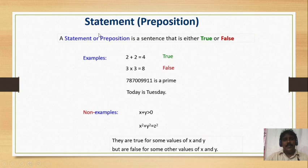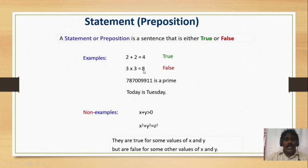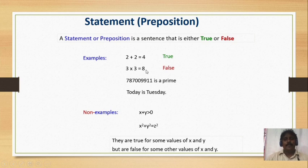Now, the first definition: a statement is also called a proposition. A statement or proposition is a sentence that is either true or false but not both. For example, 2 + 2 = 4 is a true statement. And 3 × 3 = 8 is a false statement — since 3 × 3 is actually 9, not 8. Both are statements, one true and one false.